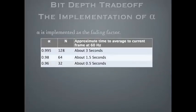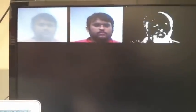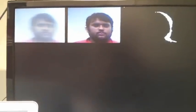We also did some experiments on different values of alpha. It turned out that the better value of alpha is around 0.995. It took about 3 seconds for an object to be in the background completely.